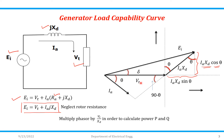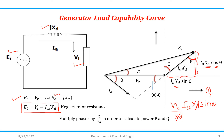Now, what we will do is multiply each and every phasor by VT upon XT. Why? Because if you take IA·XT·sin θ and multiply it by VT/XT, the XT terms cancel and you get VT·IA·sin θ — which is nothing but the equation of reactive power Q. Similarly, IA·XT·cos θ multiplied by VT/XT gives the active power P axis.